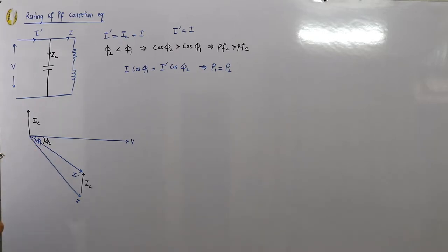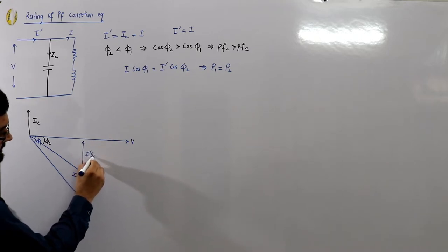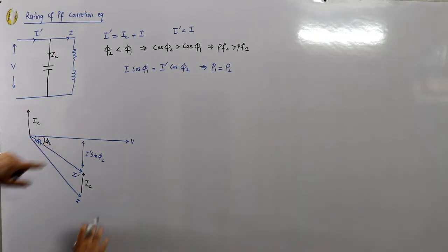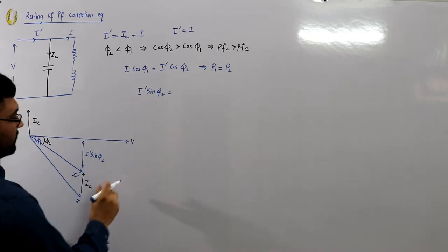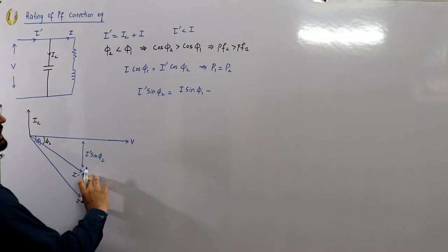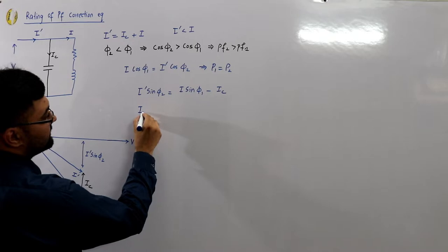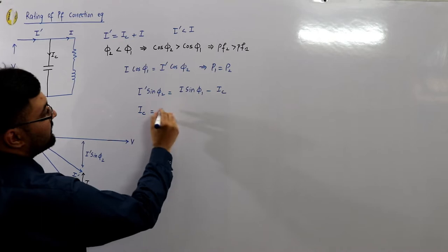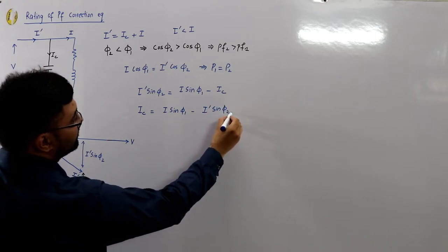For the reactive component: I' sinφ2 equals I sinφ1 minus IC. Rearranging to find the capacitor current: IC equals I sinφ1 minus I' sinφ2. We are primarily interested in the capacitor current IC.